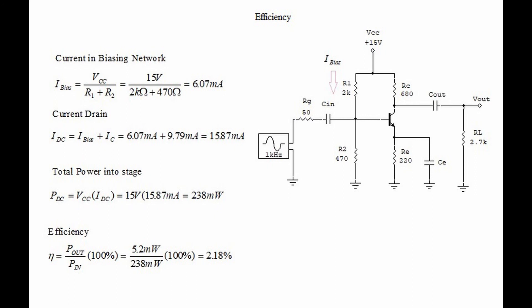It would seem that class A amplifiers have very low efficiency, but there are advantages because you have one transistor conducting 360 degrees, and what that means is that you're conducting or amplifying the positive and the negative side of a wave. Also class A amplifiers can have very high gains in the hundreds, and so there are advantages and disadvantages, and in fact there are ways to improve the efficiency.